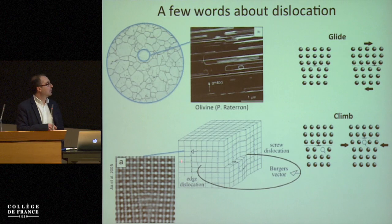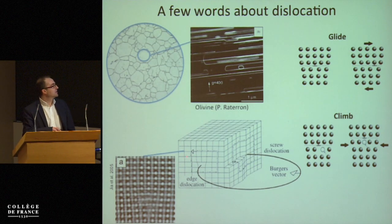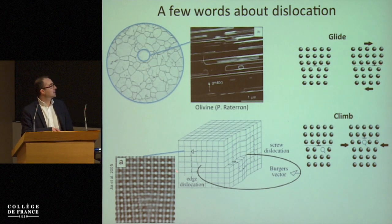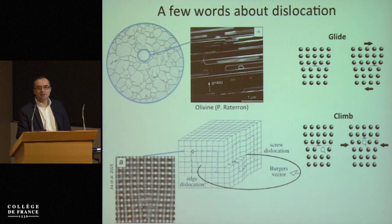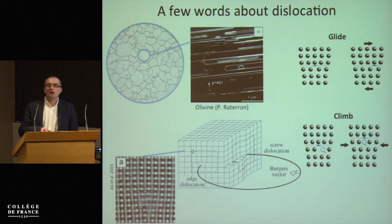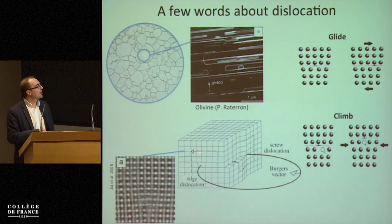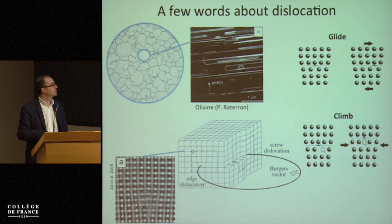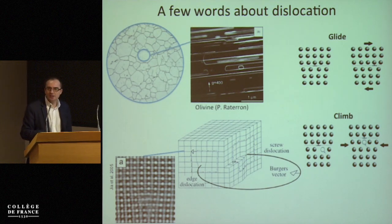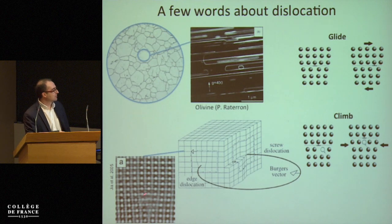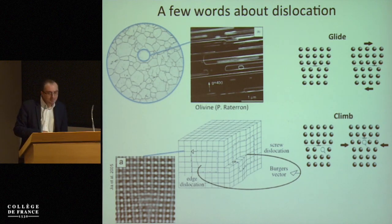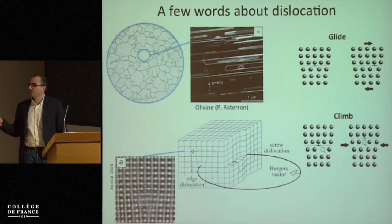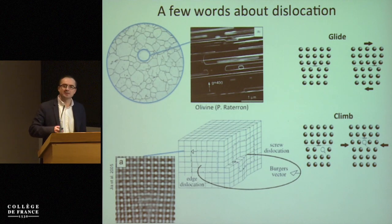Something very interesting is that if you look very close to the vicinity of the core, an important feature is how atoms are exactly arranged near the dislocation core. Here you have a high-resolution TEM micrograph of a dislocation — the dislocation is right there.